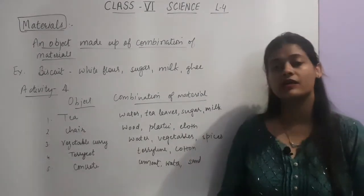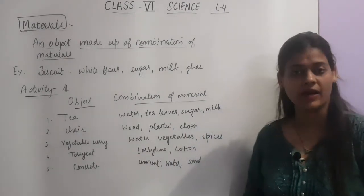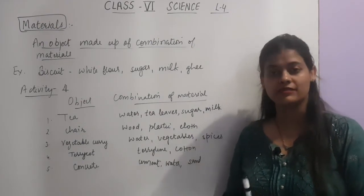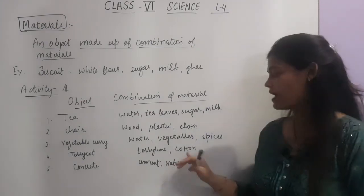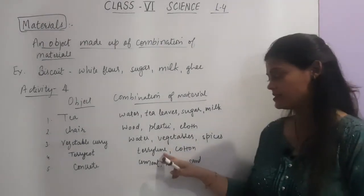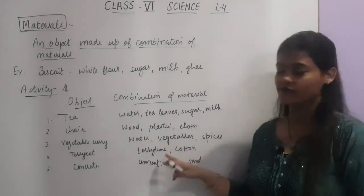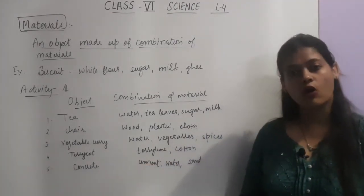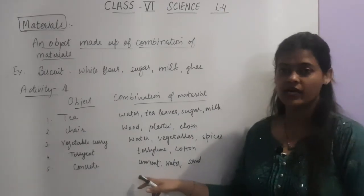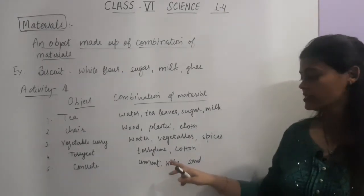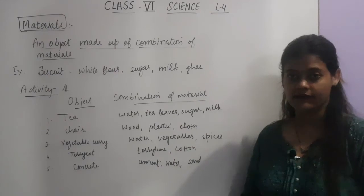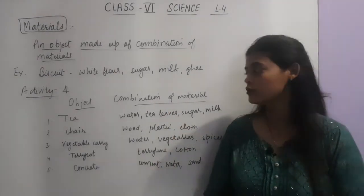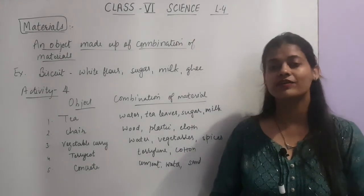Next is terricot — terricot is a kind of mixed fiber, a mixed fabric, which is made up of a combination of a man-made or synthetic fiber and a natural fiber. That is terrylene — terrylene is a synthetic fiber — and cotton is a natural fiber. Next is concrete — concrete is made up of a mixture of cement, water, and sand. So this is all about Activity 4. You have to write this down in your notebook.